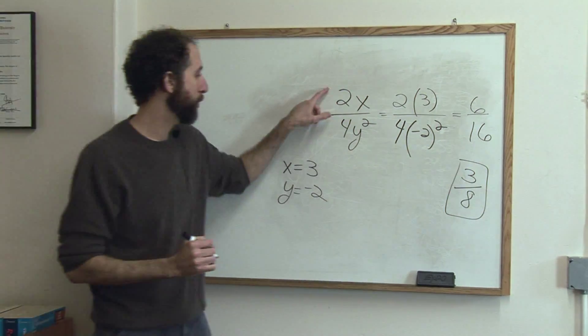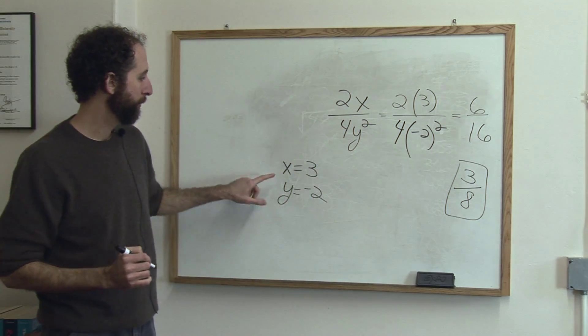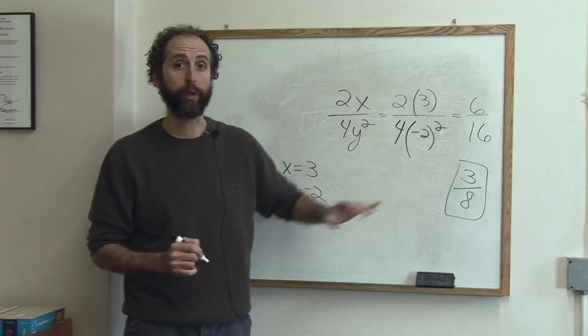Final answer, 3 eighths. So 2x over 4y squared for x equals 3, y equals negative 2 equals 3 eighths.